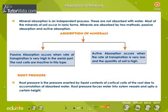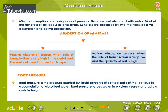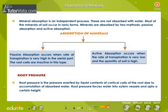Absorption of Minerals: Mineral absorption is an independent process; minerals are not absorbed with water. Most minerals in the soil occur in ionic forms. Minerals are absorbed by two methods: passive absorption and active absorption. Passive absorption occurs when the rate of transpiration is very high in the aerial part, and root cells are inactive. Active absorption occurs when the rate of transpiration is very low and the quantity of soil water is high. Root Pressure is the pressure exerted by the liquid contents of cortical cells of the root due to accumulation of absorbed water, and it forces water into xylem vessels and up to a certain height.